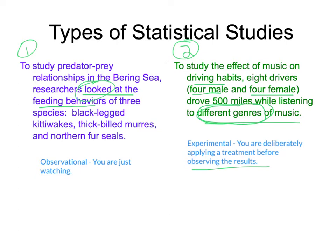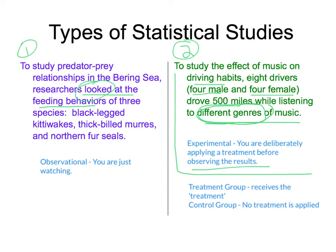Within the experimental study, there are different layers. You have a treatment group which receives the treatment — for example, if studying quitting smoking, the treatment group gets a drug to help them quit. The control group has no treatment applied; they might receive a placebo and not get the actual drug. Those are the two differences between types of groups in an experiment.